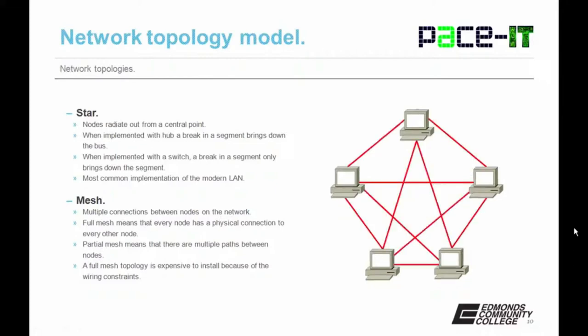Then there's the mesh. A true mesh topology — a full mesh — is when all nodes are connected to all other nodes. Those aren't very common because they are expensive and difficult to maintain, but it's common to find partial meshes, where there are multiple paths between nodes. Everyone knows at least one partial mesh network, and that would be the internet.